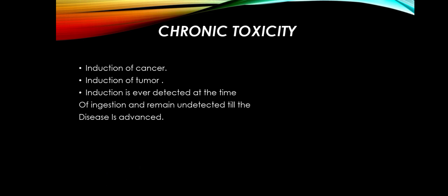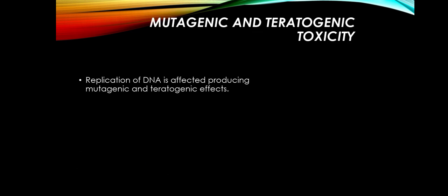Number 2 — Chronic Toxicity: induction of cancer and tumors, often undetected at the time of ingestion and remaining undetected until the disease is advanced. Number 3 and 4 — Mutagenic and Teratogenic Toxicity: replication of DNA is affected, producing mutagenic and teratogenic effects.